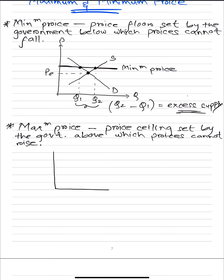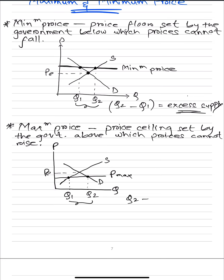The diagram for maximum price is almost the same. PE is the equilibrium price, and the maximum price is set below the equilibrium. Since prices are now lower, suppliers tend to supply less. Since prices are lower, consumers demand more.